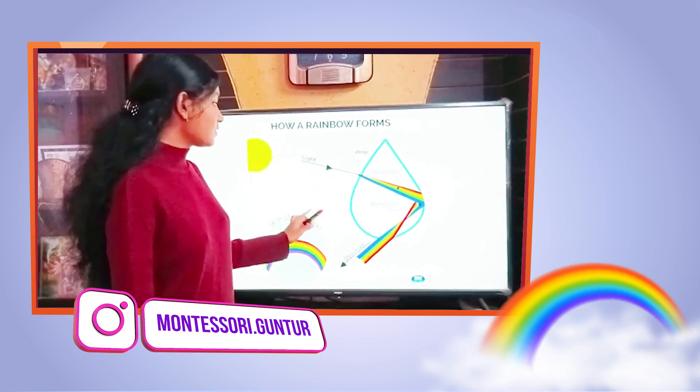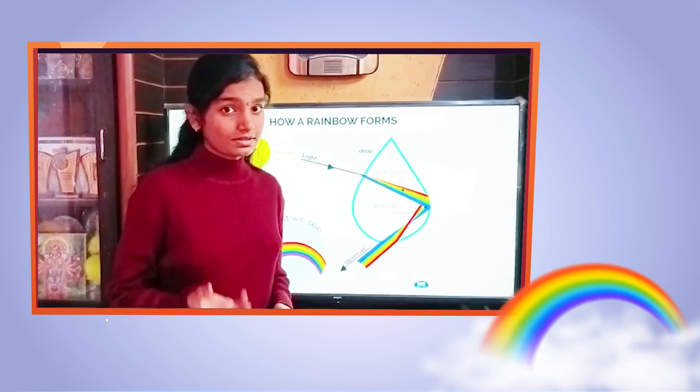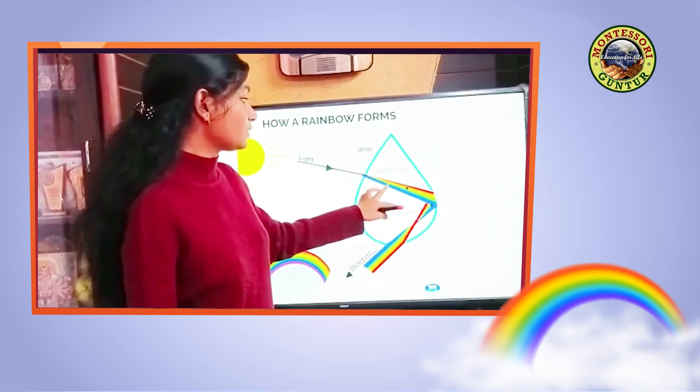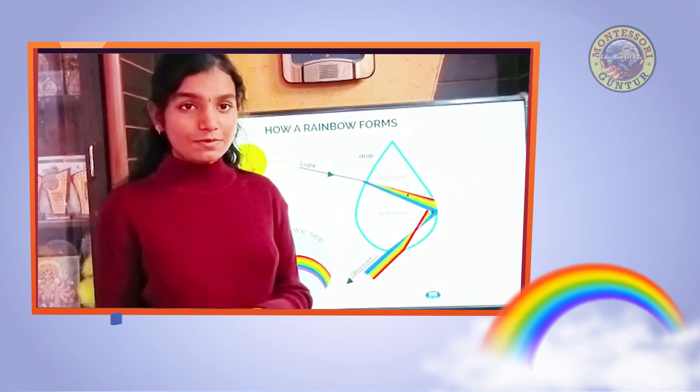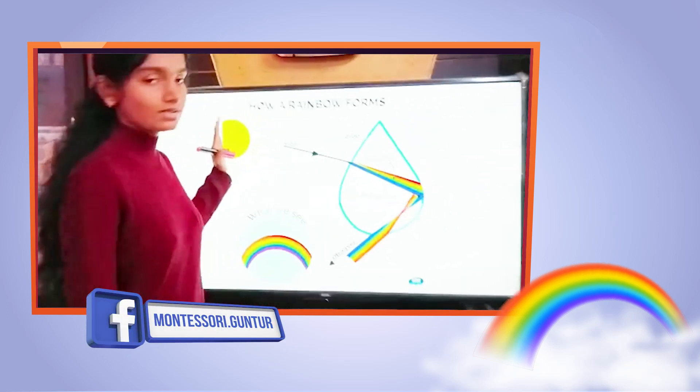The rainbow is a combination of dispersion, refraction, and reflection. What is meant by dispersion? The splitting of white light into different colors is known as dispersion. The rainbow forms when it is in the opposite direction to the sun.